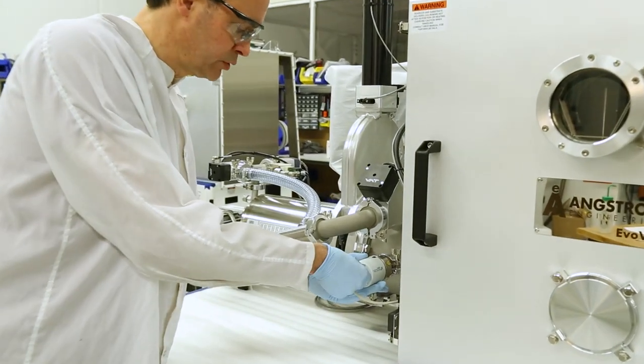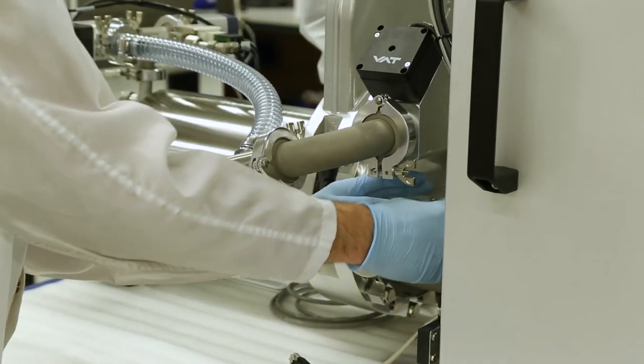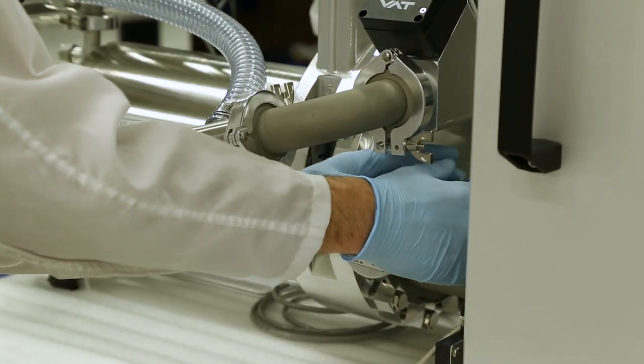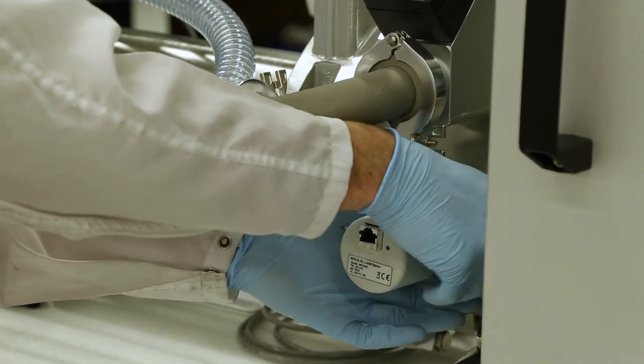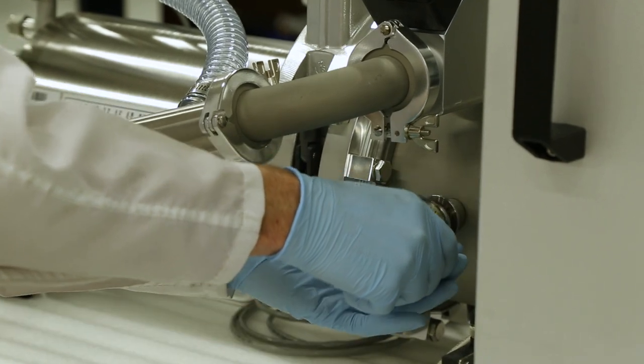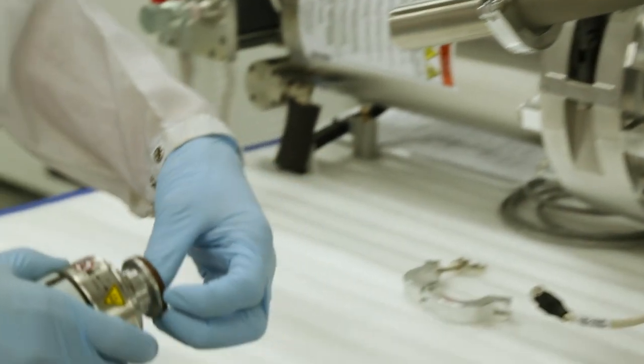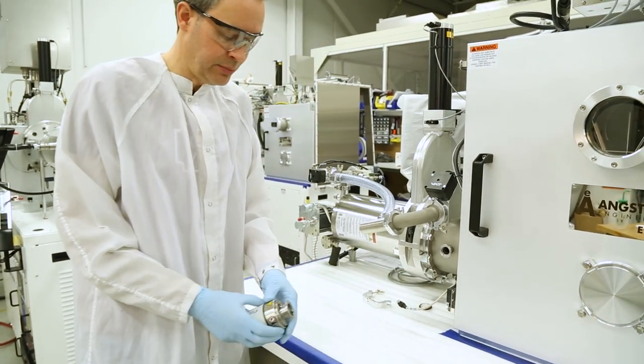To remove the gauge we're going to unplug the communication cable, undo the clamp and remove the gauge from the flange. We'll leave the seal here and take the gauge to the bench to clean.